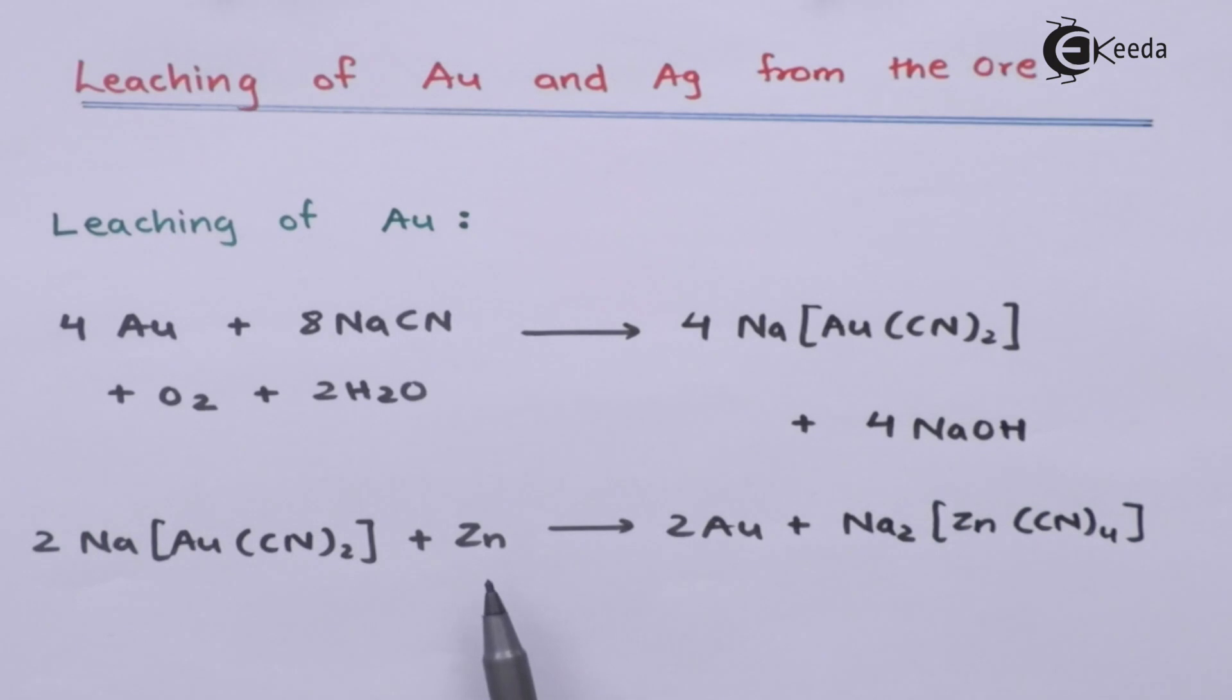Thereby, zinc is acting like a reducing agent and it will itself get oxidized and help to reduce the Au+ to Au. In this case we will obtain 2 moles of Au along with the other soluble complex, sodium tetracyano zincate. This is how the leaching of Au (gold) is being done.